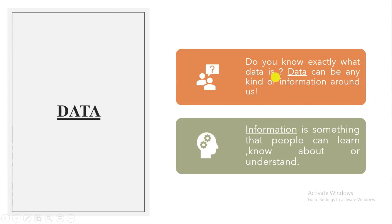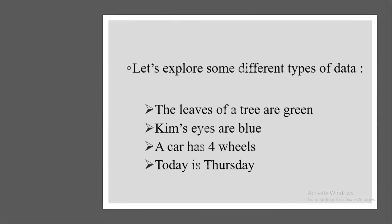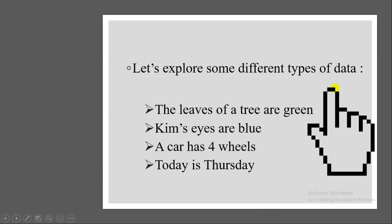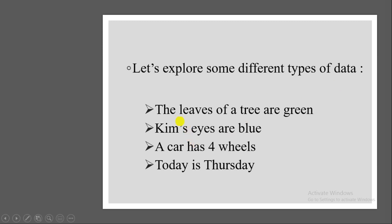Do you know what exactly data is? Data can be any kind of information around us. We are going to study what is information. Information is something that people can learn, know about, or understand. So here we have two terms: what is data and what is information. Let us explore some different types of data. The first example is the leaves of a tree are green. Second, Kim's eyes are blue. A car has four wheels, and the fourth example is today is Thursday. All these are examples of data.